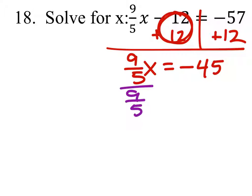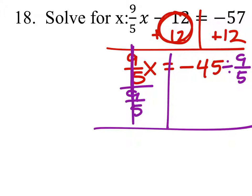So, divided by 9/5 and divided by 9/5 on both sides, that becomes a 1, so we've got 1x equals. But once again, we don't usually divide by fractions.